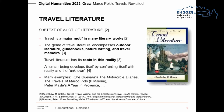Travel is a major motive in many literary works. People's fascination with unknown regions and their exploration continues unabated, and travel is a regular part of many people's lives. Travel literature appears in many forms such as outdoor literature, guide books, nature writing, and travel memoirs. Examples of well-known travel literature are Che Guevara's The Motorcycle Diaries, The Travels of Marco Polo, or Peter Mayle's A Year in Provence.